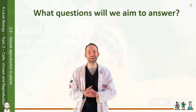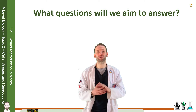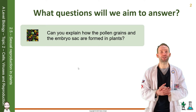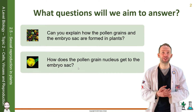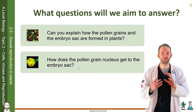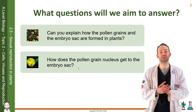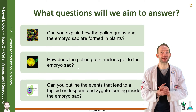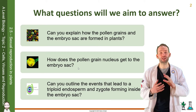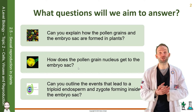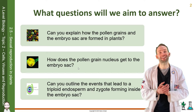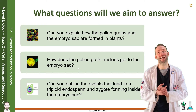In this lesson we're going to learn how pollen grains and the embryo sac are formed in plants. We'll look at how pollen grain nuclei can get to the embryo sac, and also outline the events that lead to a triploid endosperm and zygote forming inside the embryo sac.